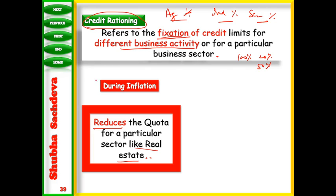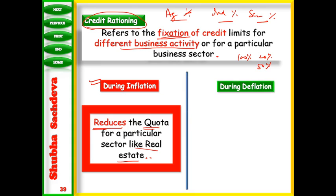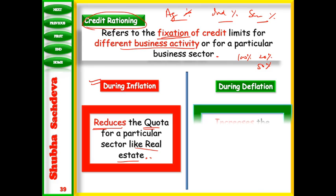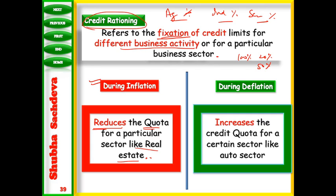Credit rationing involves fixation of credit limits for different business sectors. During inflation, RBI reduces the quota for non-essential sectors and increases the quota for essential sectors like agriculture. During deflation, sectors that are not for basic needs are given more freedom, meaning their quota is increased — for example, the auto sector.